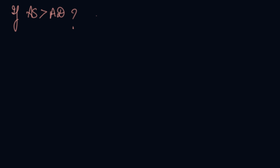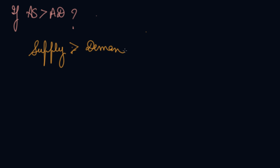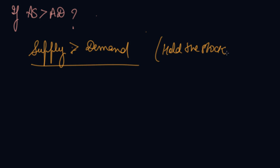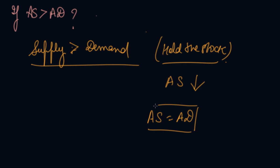What will happen if aggregate supply is more than aggregate demand? If supply is greater than demand, the producer will hold the stock because demand is not there. The producer will reduce supply in the market. So ultimately aggregate supply will come down and will equal aggregate demand again, and equilibrium will be restored in the economy. I hope you have completely understood how to calculate the equilibrium level of income using the AS and AD approach. Do download our Scholars Learning App and enjoy the learning experience. Thank you.